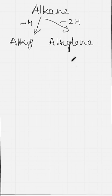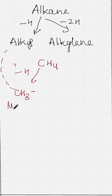So let's take an example. For example I'm working with methane. So if I am removing one hydrogen from methane what I'll get is methyl. This is methyl, which is alkyl.